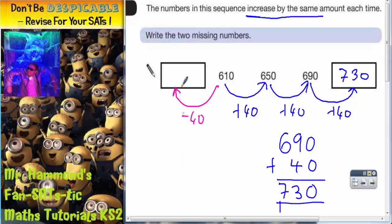So again, you may be able to see it in your head and hopefully if you can do that you would get 570. Just to double check, 610 subtract 40.